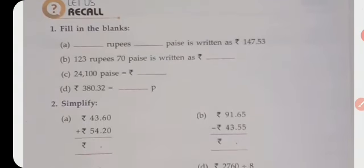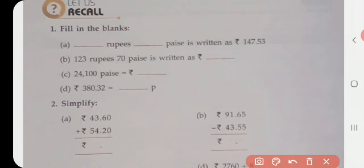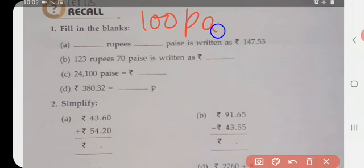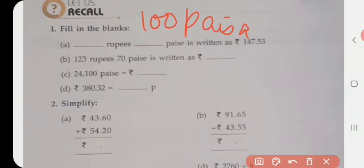We all know that one hundred paisa makes one rupee, right? So 100 paisa is equal to 1 rupee. This is actually the calculation that we can understand - how many paisa makes how many rupees. Here you are given dash rupees and dash paisa is written as ₹147.53.